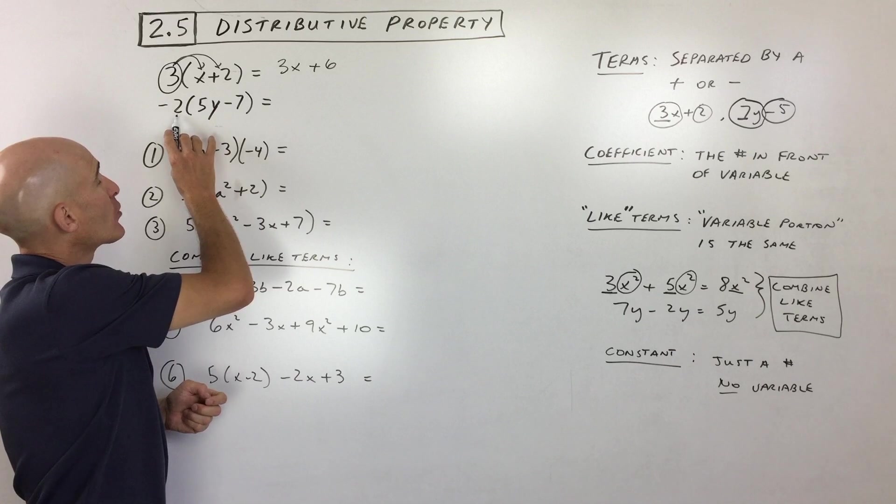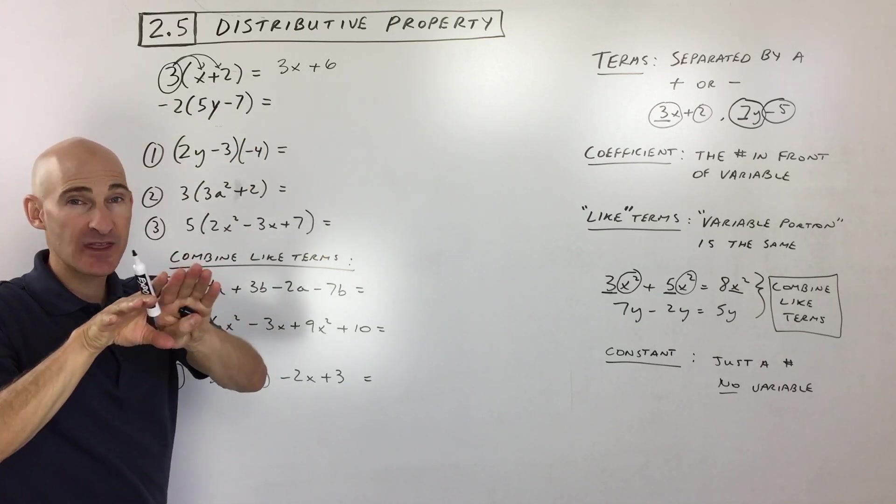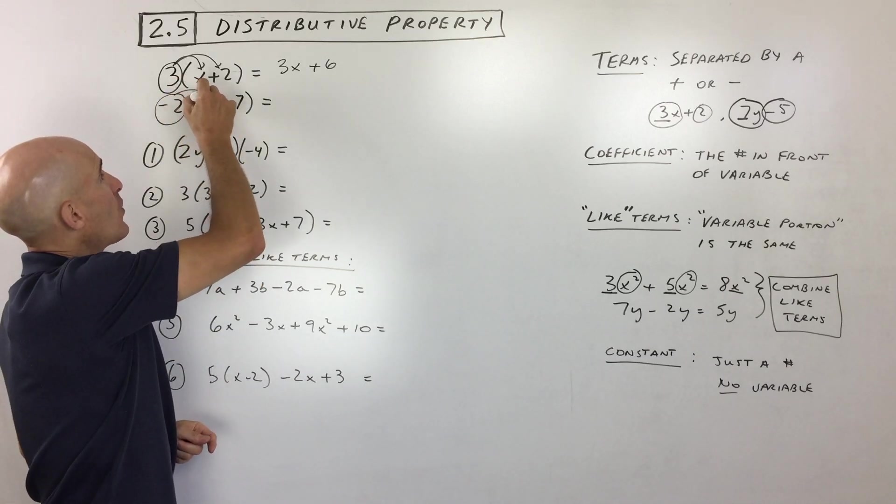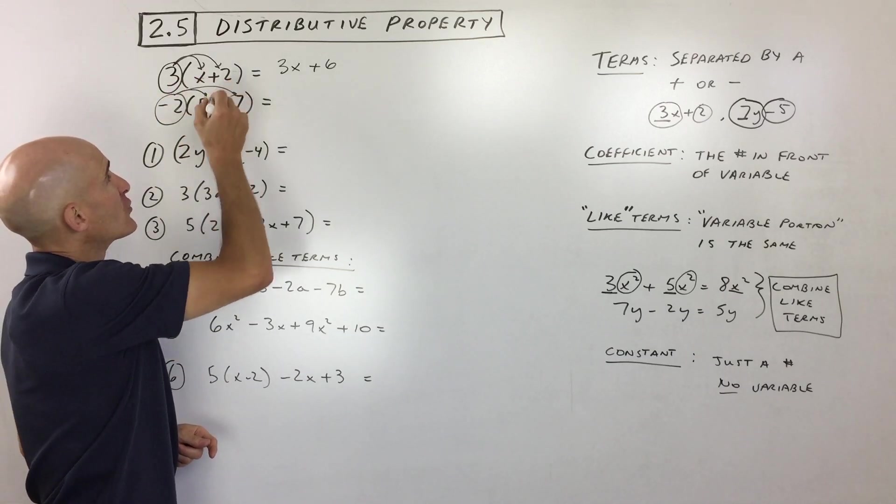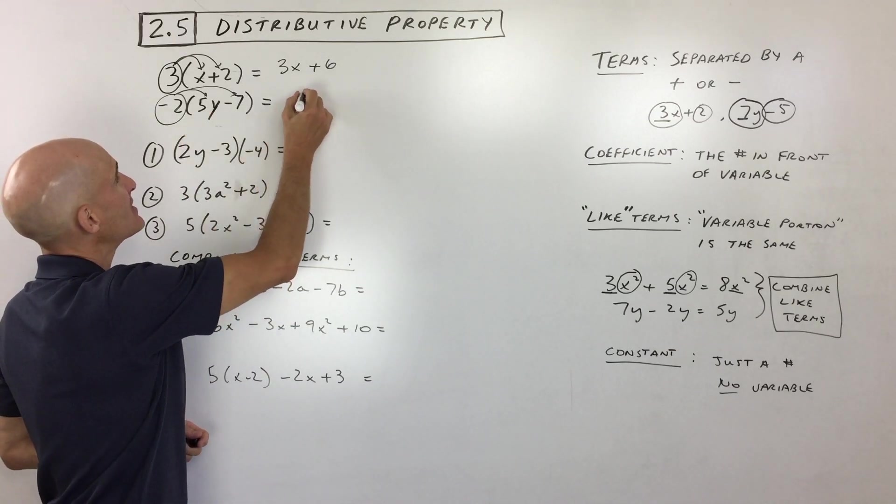So again, when you see a number or a quantity, I should say, in front of a group like a parentheses, there's nothing in between. That means they're multiplied together. You want to take that quantity on the outside. You want to distribute it, meaning you're going to multiply it to what's on the inside of the parentheses.